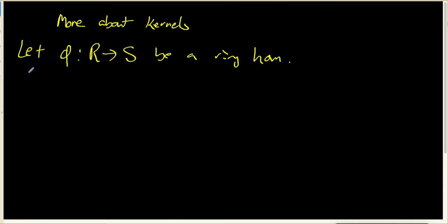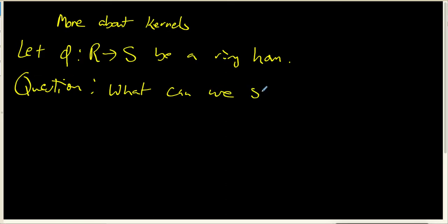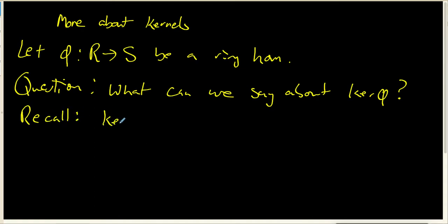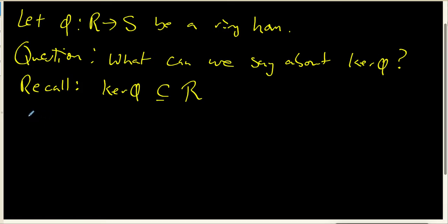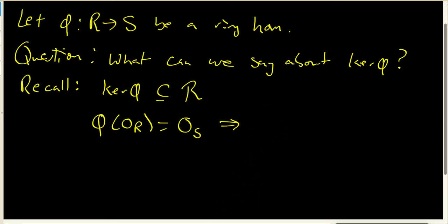What I want to ask is: what, if anything, can we say about the kernel of phi? Starting with some known facts — the kernel is a subset of the domain ring R. In a previous video, we also showed that phi of the zero element in R must be the zero element in S. So the kernel of phi cannot be the empty set.